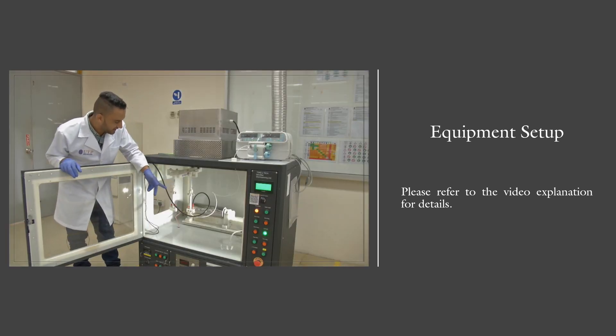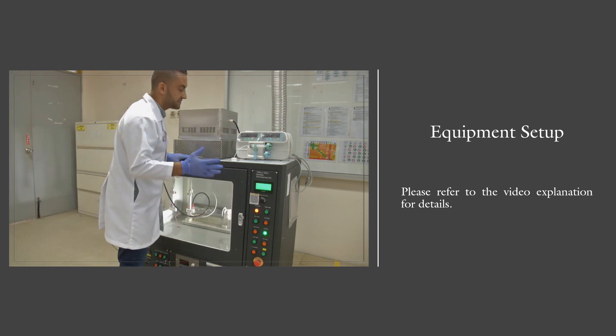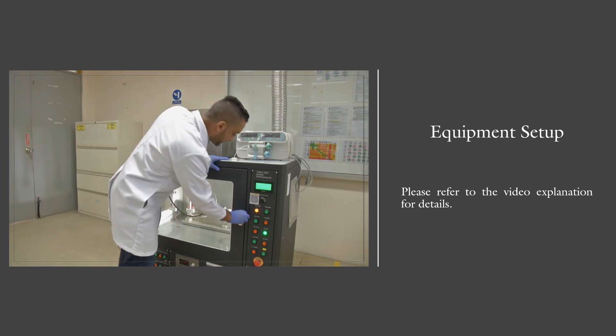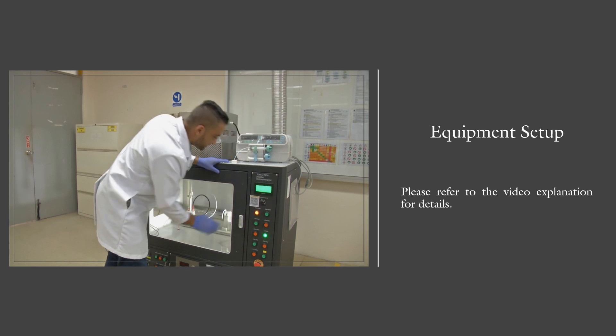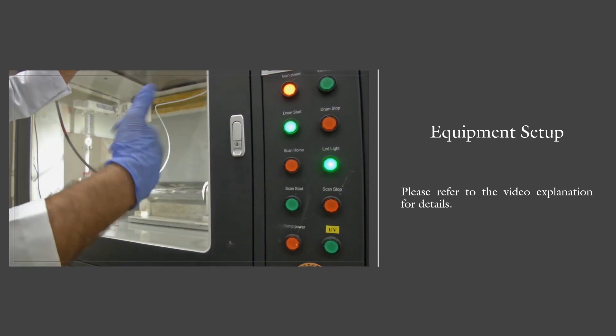Now after we've connected the electrical voltage to the needle, close this door because it's high electrical voltage. You need to be careful. Make sure it's closed. Now we turn on the drum to collect the fibers.